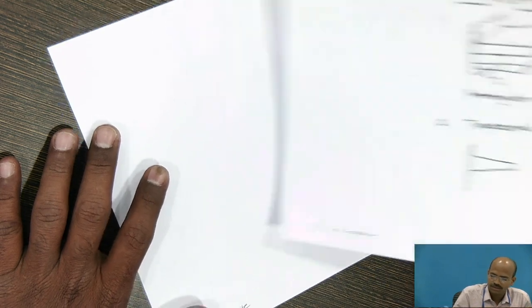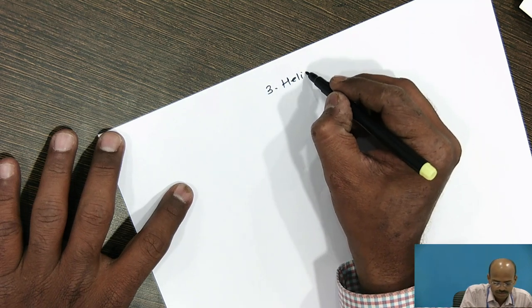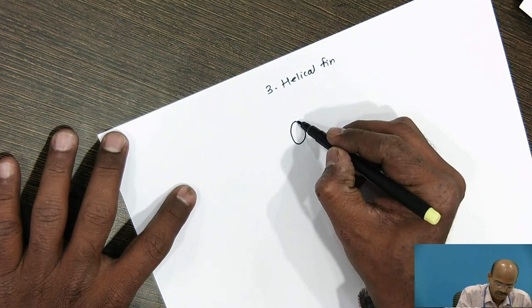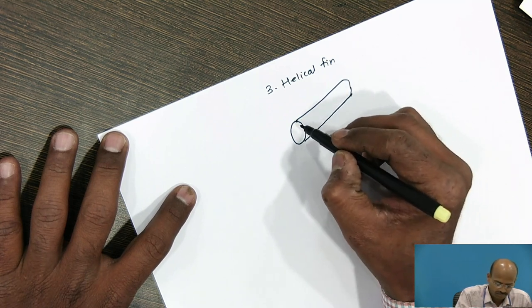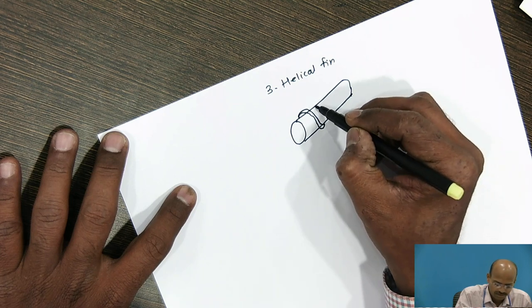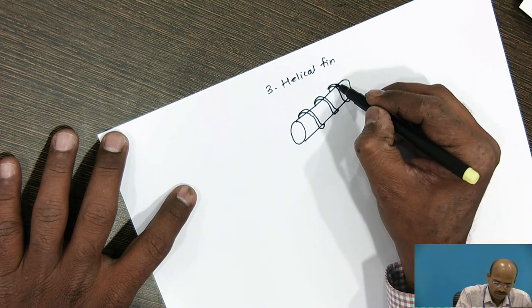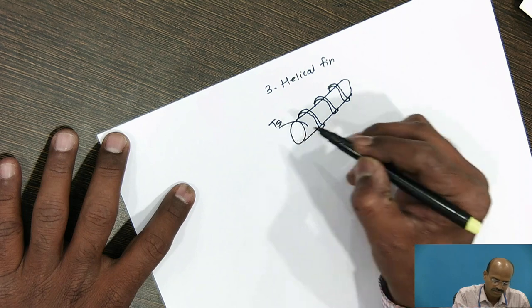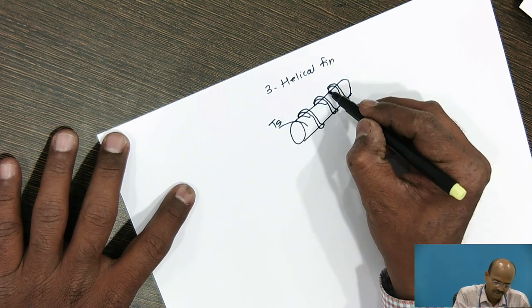In the third type of fin, that is helical fin. Suppose, there is a cylinder, which needs to increase the heat transfer. Then, like this helical plates, we can connect to the base surface. So, here, this is the base surface, whose temperature is T0. These are the helical fins.